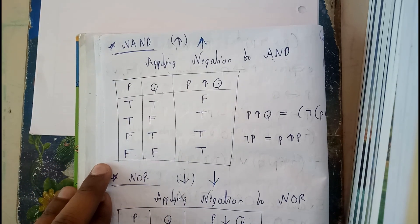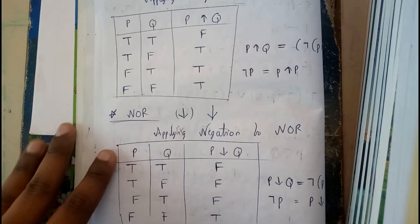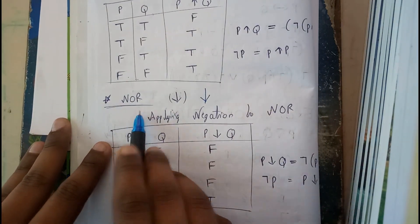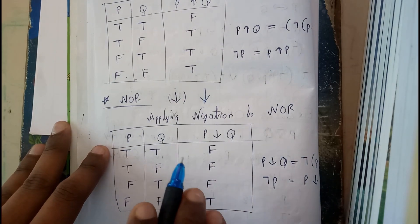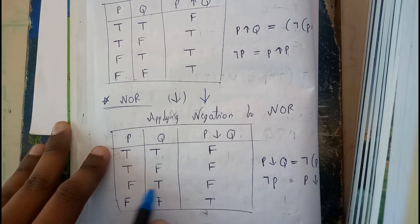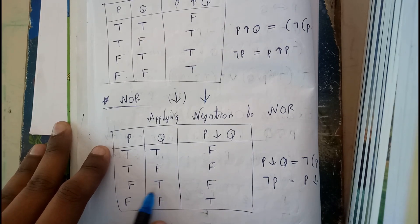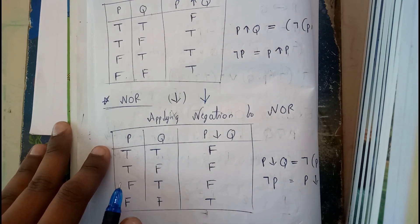Next, NOR. NOR is nothing but negation of OR. In OR, if any one of them is true, then the result is true. Here, if any one of them is true, then the result is false. That's what I have just written here.